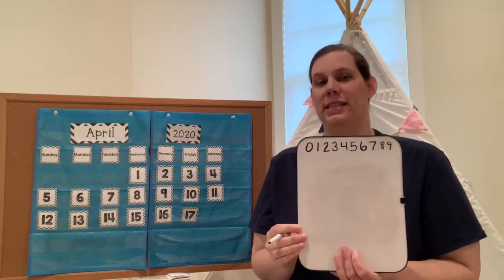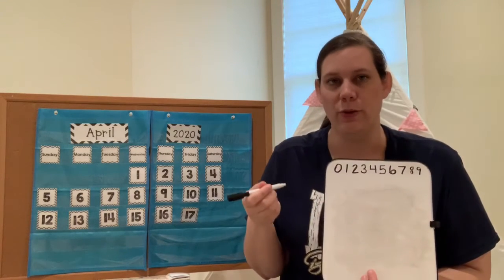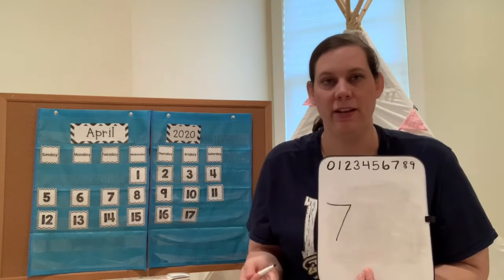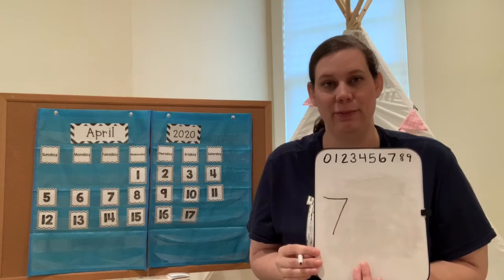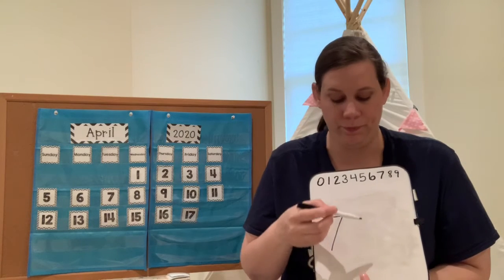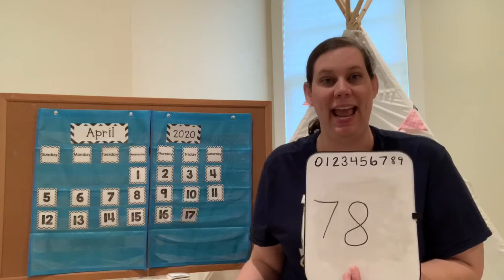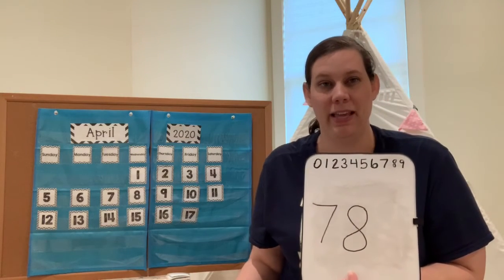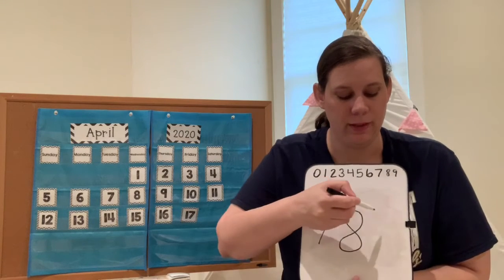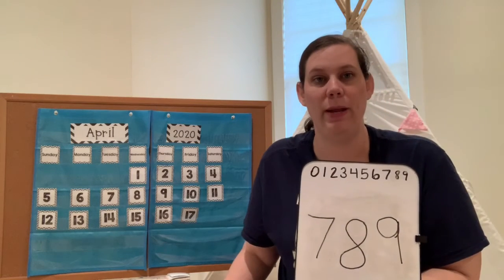So the first number we did this week was the number 7. Number 7 has a song — you guys do it in the sky while I do it on the board. Go right across the sky and then down from heaven, that's the way we make a 7. Our next one is the number 8: make an S, but don't wait, come back up to make an 8. And our last one added this week was the number 9: make an oval, then a line, that's the way we make a 9.